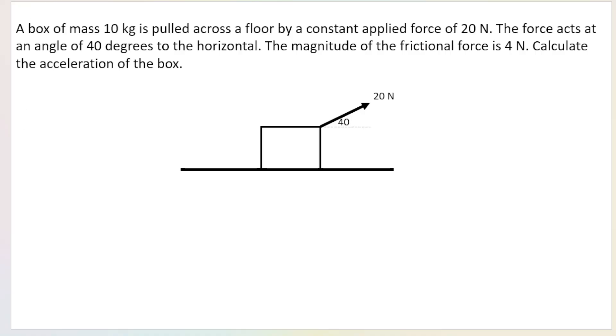So our question says that we have a box, they give me the mass of the box and it's being pulled across the floor by a constant applied force of 20 Newton. This is our applied force. The force acts at an angle of 40 degrees to the horizontal. The magnitude of the frictional force is 4 Newton. And then they say calculate the acceleration of the box.